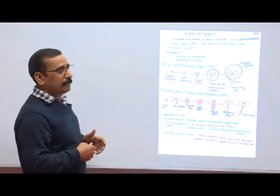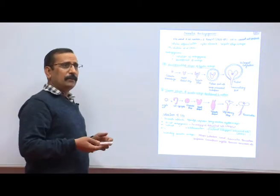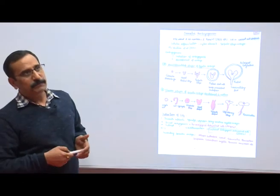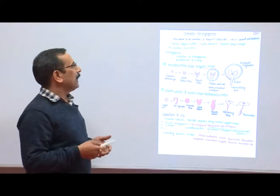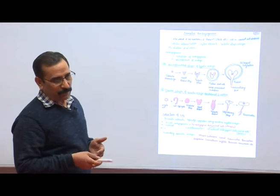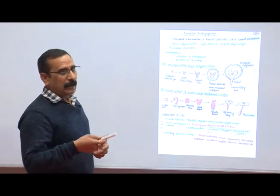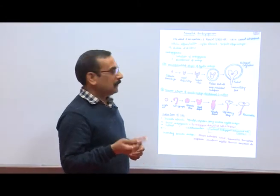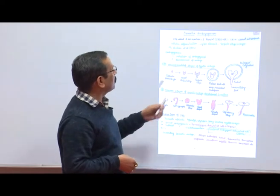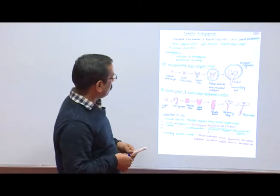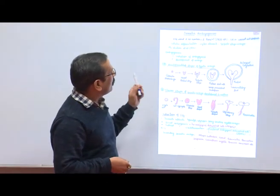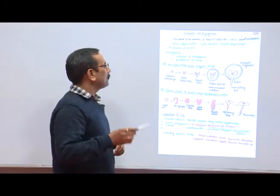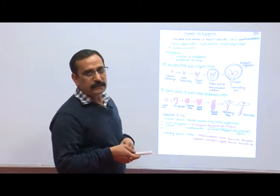Parthenogenesis is the development of embryo from axles — this results in seedless plants. Endogenesis is the development of embryo from male gametophytes. In somatic embryogenesis, there are two processes: direct somatic embryogenesis and indirect somatic embryogenesis.